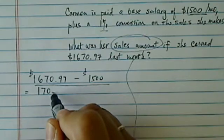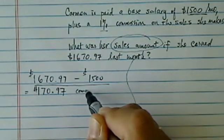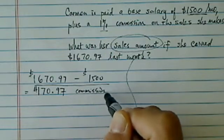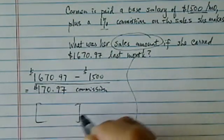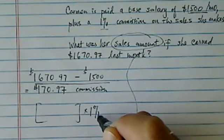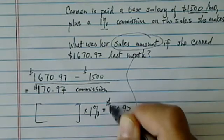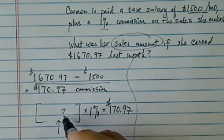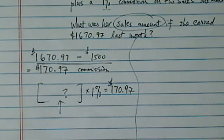So this is the commission part she made. Now this commission is based on whatever she was selling times 1% is equal to $170.97. So what has to go in there, question mark?